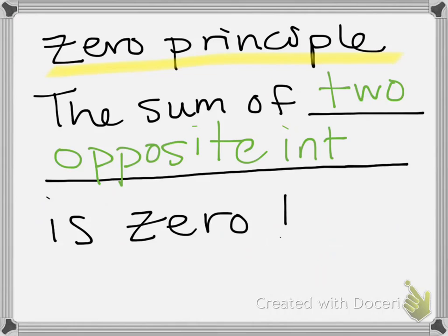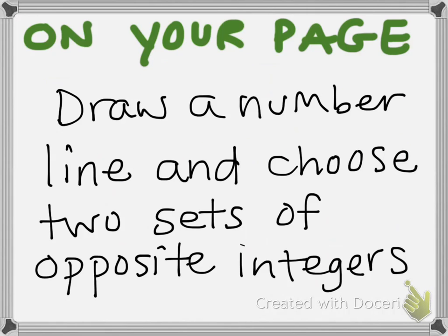We're gonna do a couple examples of that. This is something I want you to have in your notes so make sure you've copied this down or if you would like to think of it in a different way that's fine too. So on your page I just want you to draw a number line and choose two sets of opposite integers to show me. And I'm gonna do two on the next page so you can follow along and do some different ones.